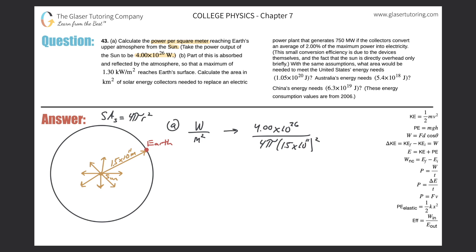Let's just calculate it. So it's 4 times 10 to the 26, divided by 4 times π times 1.5 times 10 to the 11th squared. We get a value of about 1.41 times 10 to the 3 watts per meter squared.